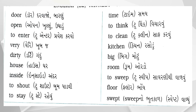Time — T-I-M-E — Time, એટલે સમય. To think — T-O-T-H-I-N-K — To think, એટલે વિચારવું. To clean — T-O-C-L-E-A-N — To clean, એટલે સાફ કરવું. Kitchen — K-I-T-C-H-E-N — Kitchen, એટલે રસોડું. Big — B-I-G — Big, એટલે મોટું.